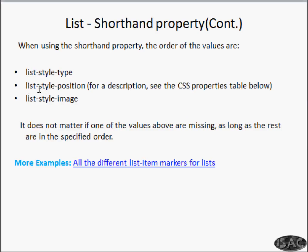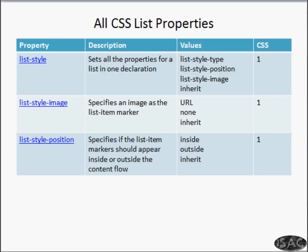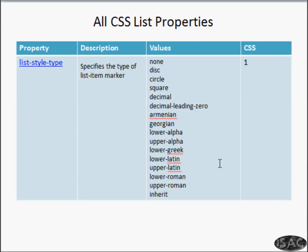If you want to control position, you can use list-style-position and specify the position, and the image or marker will be placed accordingly. These are the values which we can pass to list-style-type.